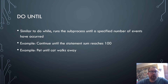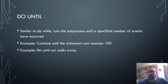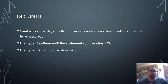Do-until is similar to do-while. It runs the sub-process until a specified number of events have occurred. It's going to do that specific thing until there's a condition for it to stop. For example, you may continue until the statement sum reaches 100 — once it hits 100, it stops. In the cat example, I may pet the cat until the cat walks away — that's a do-until.